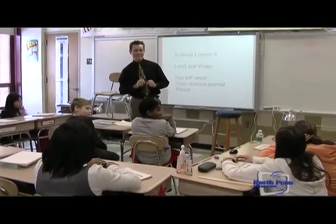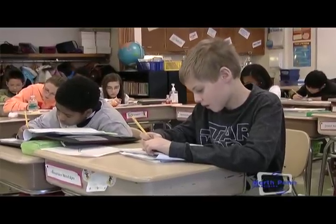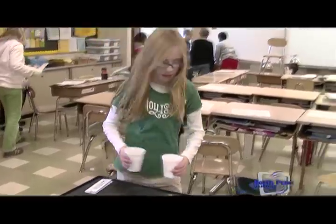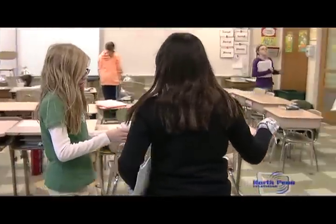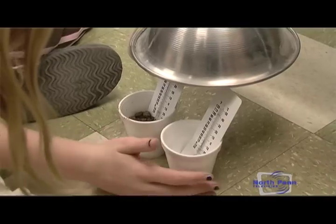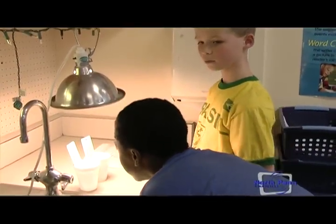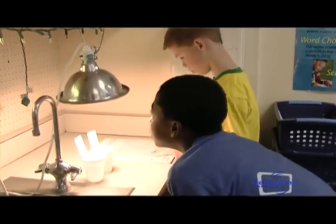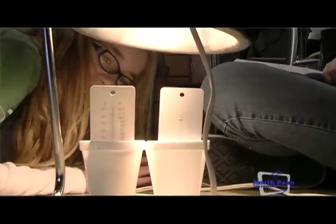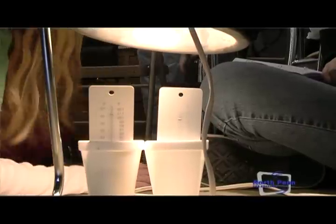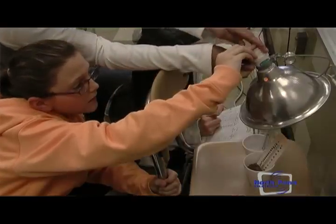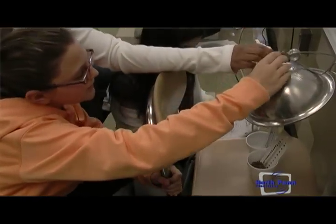What the students did is they first started out making predictions on what impact they thought soil and water would have on weather. Then what we did is we took soil and water and lamps that simulated the Sun and we examined the temperature change of soil and water over the course of 20 minutes. We heated the water and then we cooled the water and soil to see what kind of temperature differences we would have.